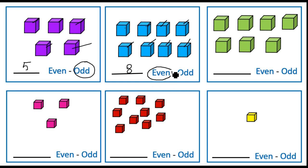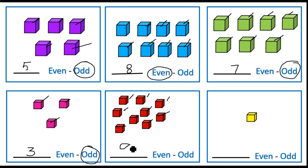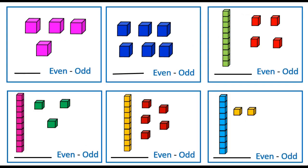Here: one, two, three, four, five, six, seven — write seven. Seven is an odd number. Here: one, two, three — three blocks, so three is an odd number. Here: one, two, three, four, five, six, seven, eight, nine — nine blocks, nine is an odd number. And one is also an odd number — circle odd.